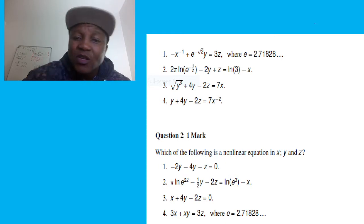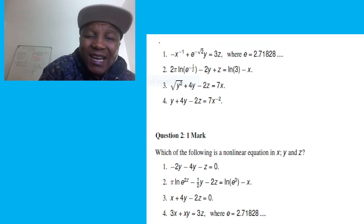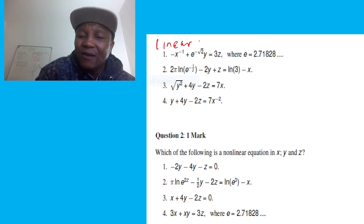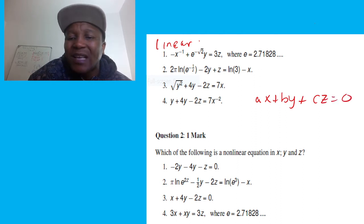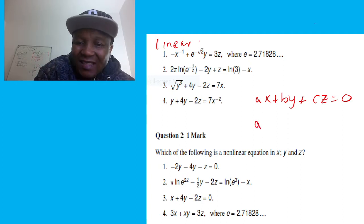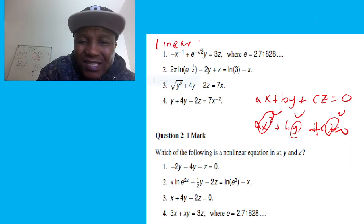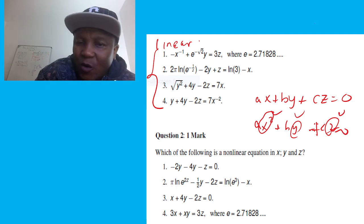Now let's get to the business. The first question asks us to determine which equation is linear. When we say something is linear, it has to be in the form ax + by + cz = 0 — not necessarily exactly like that, but in that format. If there's a square on any variable, it's not linear. So x, y, z should not have a square for the equation to be linear.